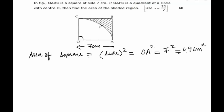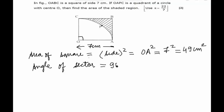To find out the area of the sector OAPC, we need to realize what angle the sector is subtending at the center of the circle O. The angle would be angle COA, which also happens to be the angle of the square, and hence it would be equal to 90 degrees. So, the angle of the sector equals 90 degrees, and the radius of the sector will be OA, which is equal to the side of the square and hence equal to 7 cm.